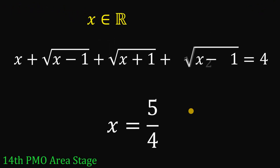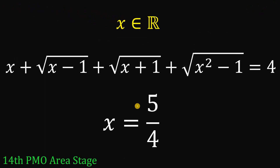Therefore, the only real value of x that satisfies the equation x plus square root of x minus 1 plus square root of x plus 1 plus square root of x squared minus 1 equals 4 is x equals 5 over 4. And as always, we are done.